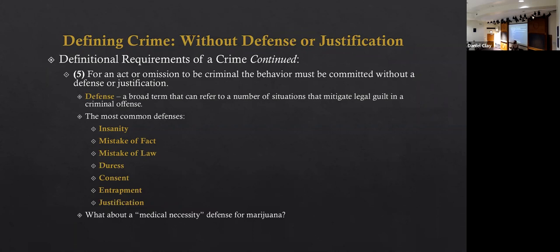In that scenario, mistake of fact wouldn't get you off the actual crime, but you'd get attempted crimes — which are obviously less severe than fully committed crimes. Mistake of law is when you thought the law was X when the law was Y. For example, you've lived in Pennsylvania your whole life, come to New York at age 18, and try to buy cigarettes — but in New York the age is 21. You could try to plead mistake of law, but it's very rarely successful because you're expected to know every law at all times.